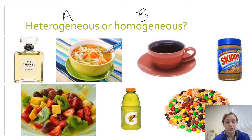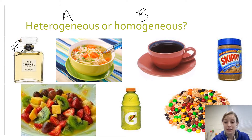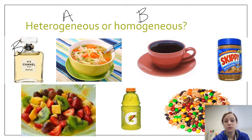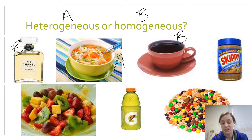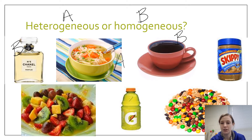Chanel No. 5, a perfume — we definitely know that's going to be homogeneous. We want our perfume to have the same level of scent in every spritz. Chicken noodle soup — you're definitely going to get a different spoonful every time, so that's heterogeneous. Coffee we definitely want to be homogeneous — we don't want coffee grounds in our coffee. Sometimes your creamer might not mix all the way in, but we want that to be a homogeneous mixture. I'm going to skip peanut butter for now and come back to that one.